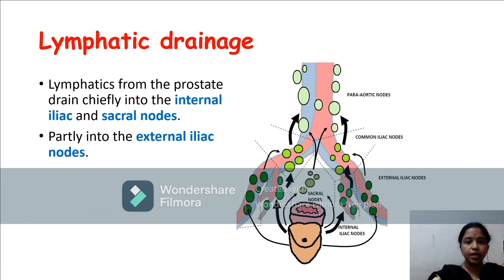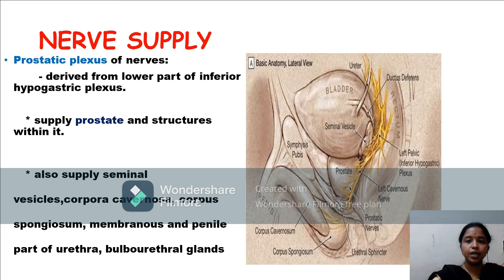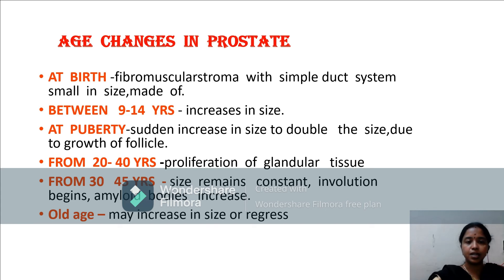Lymphatic drainage is mainly to the internal iliac and sacral lymph nodes, with partial drainage to the external iliac group of lymph nodes. The nerve supply comes from the prostatic plexus of nerves, derived from the inferior hypogastric plexus, which mainly supplies the prostate and also supplies the seminal vesicle, corpora cavernosa and spongiosum, membranous and penile parts of the urethra, and the bulbourethral glands.